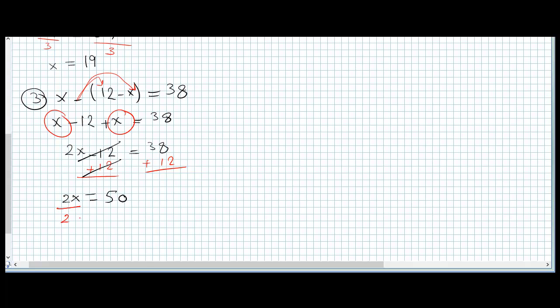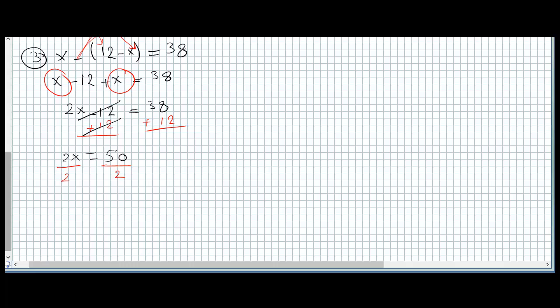Now we divide both sides by 2. 2 divided by 2 is 1, so we just have x remaining. 50 divided by 2 is 25. So x equals 25.